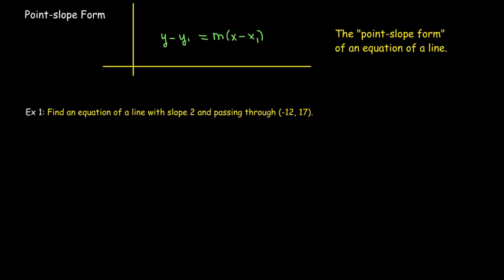We want to find an equation of a line with slope 2 and passing through (-2, 17). I want to emphasize this word 'an equation' because there are many forms of writing down an equation of a line. I've got my m value, I have my x1 and my y1. Now I just need to substitute them into the formula. And that gives me my equation.